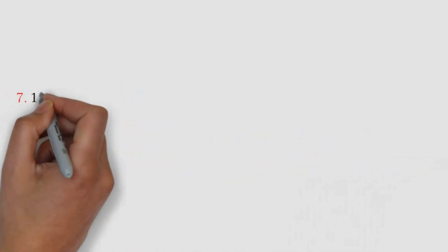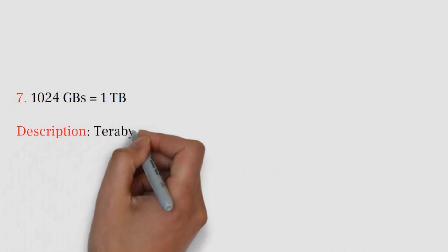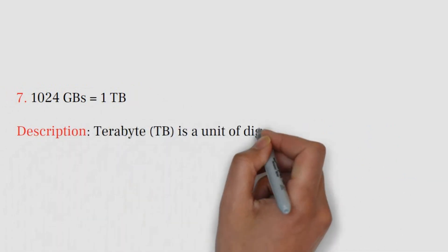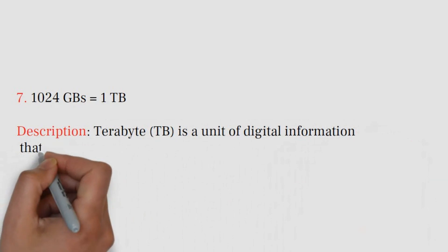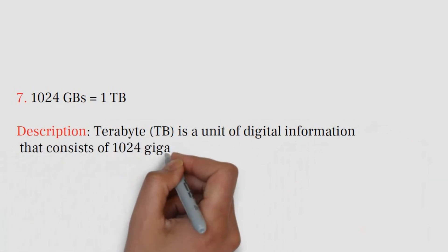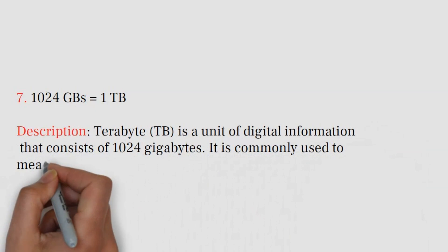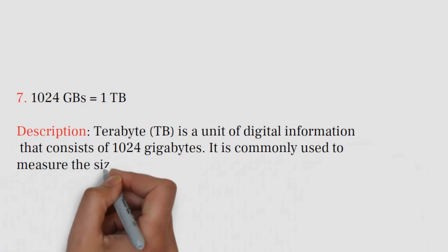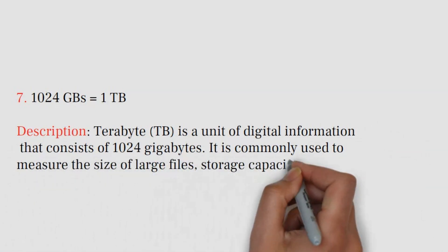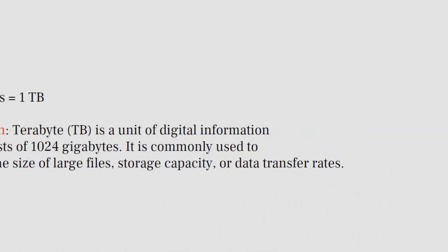Number 7: 1024 GBs equals 1 terabyte. Terabyte (TB) is a unit of digital information that consists of 1024 gigabytes. It is commonly used to measure the size of large files, storage capacity, or data transfer rates.